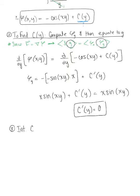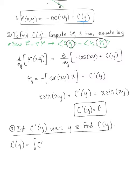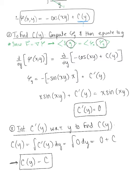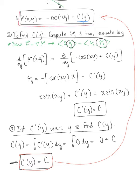In step three, we integrate C'(Y) with respect to Y to find the arbitrary function C(Y). The integral of zero dY leaves us with just an arbitrary constant C. So C(Y) is simply the constant C. Substituting back into our initial potential function, we conclude that the potential function phi(X,Y) equals minus cosine of XY plus C.